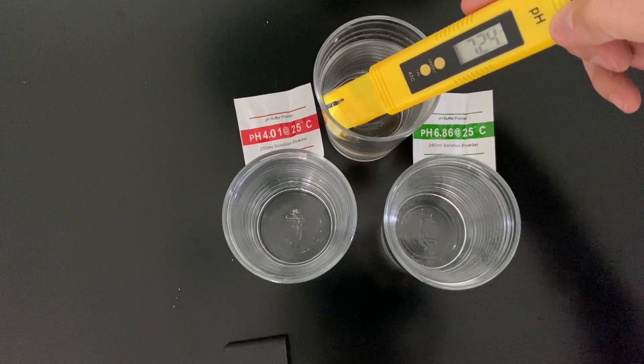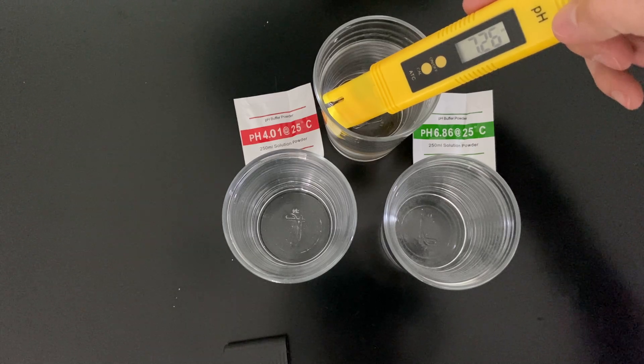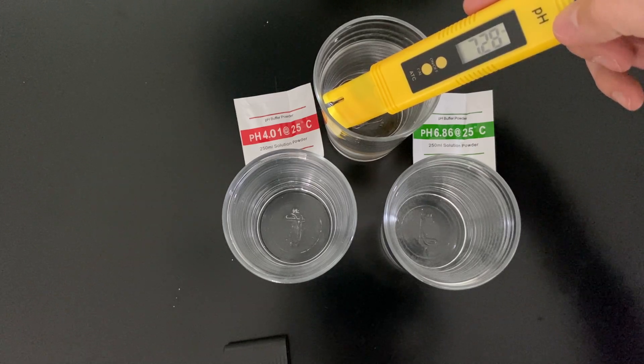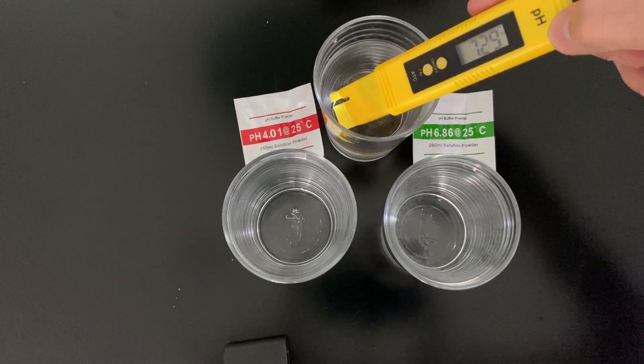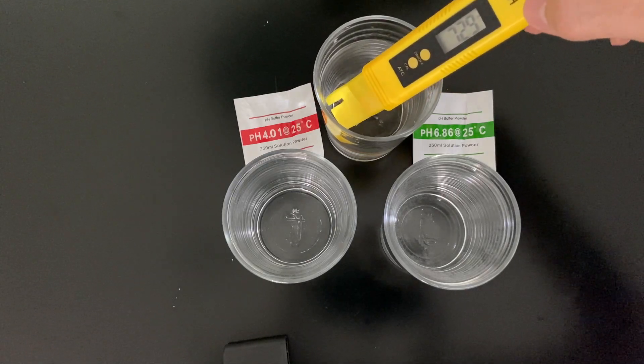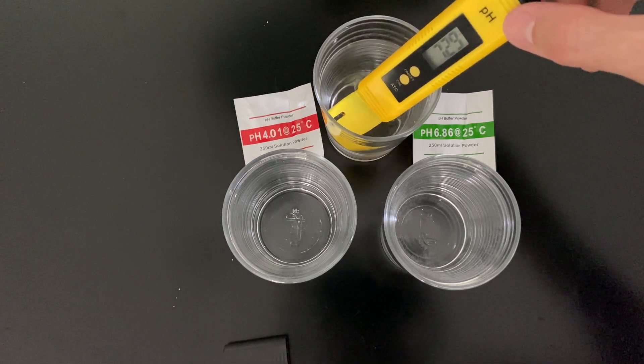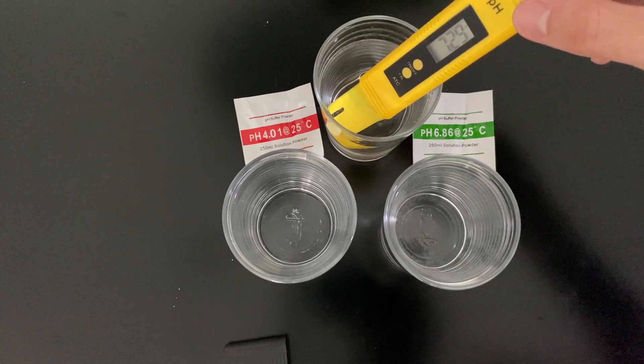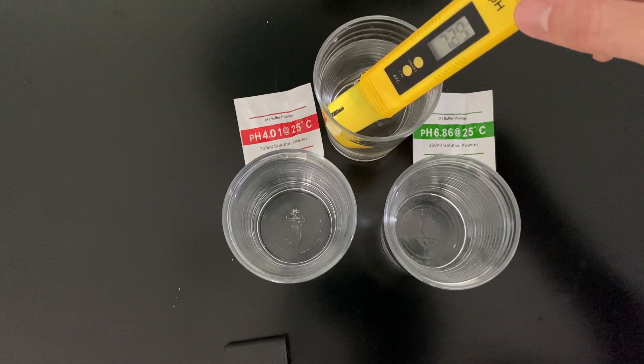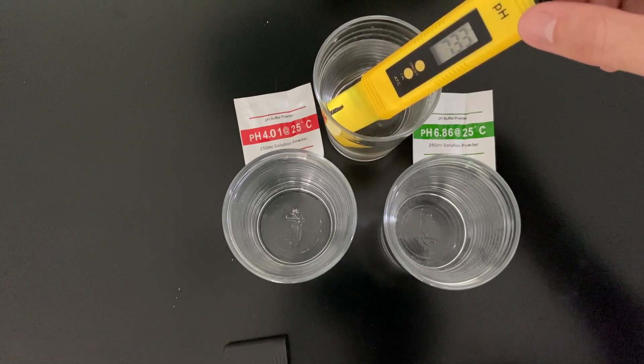It's showing 7.37, 7.28. So this is my normal water supply here, the tap water. You can see it's around 7.3 pH.